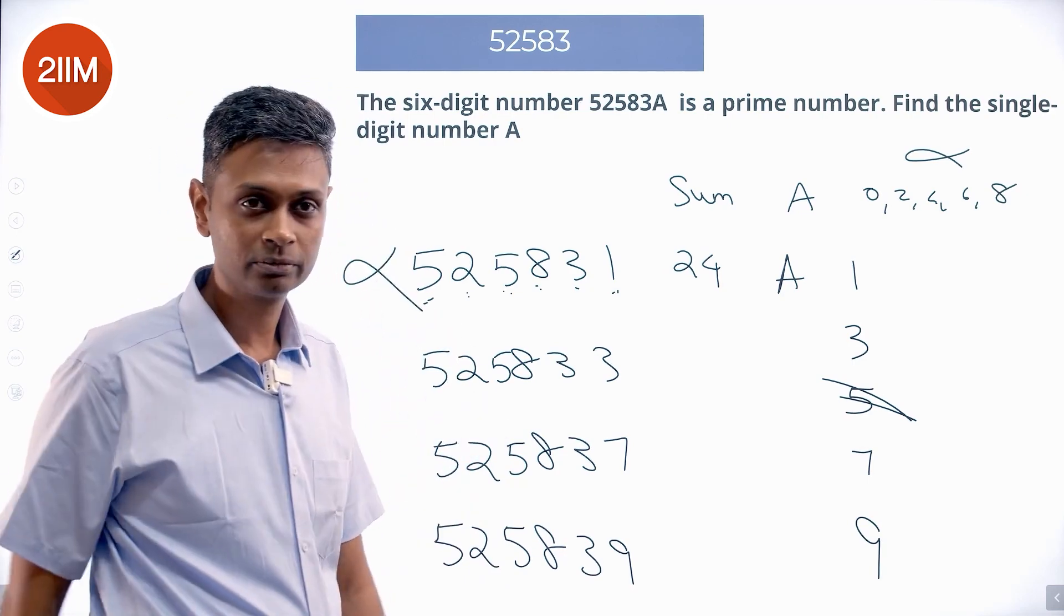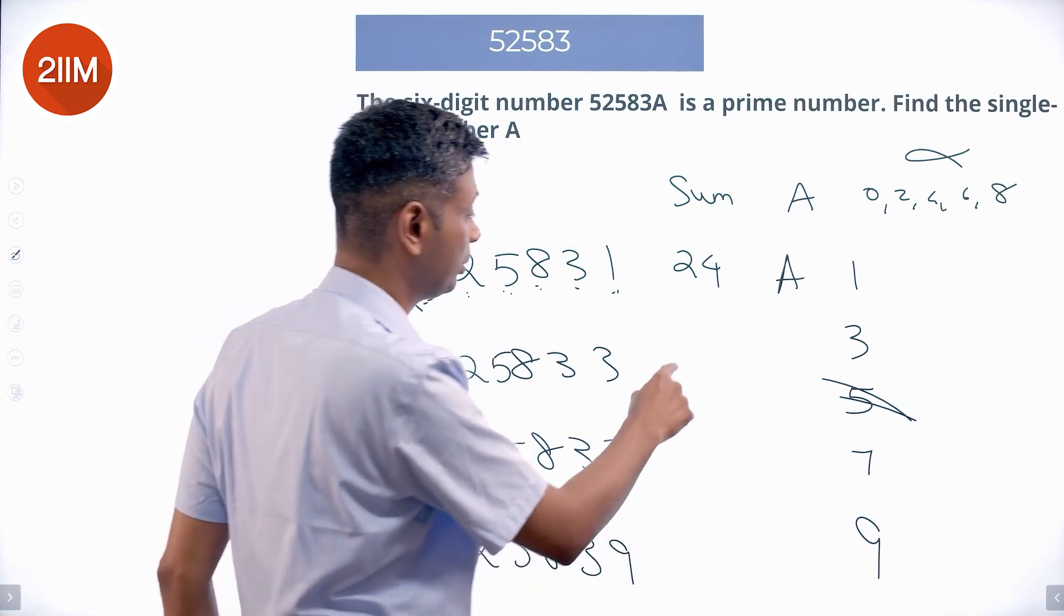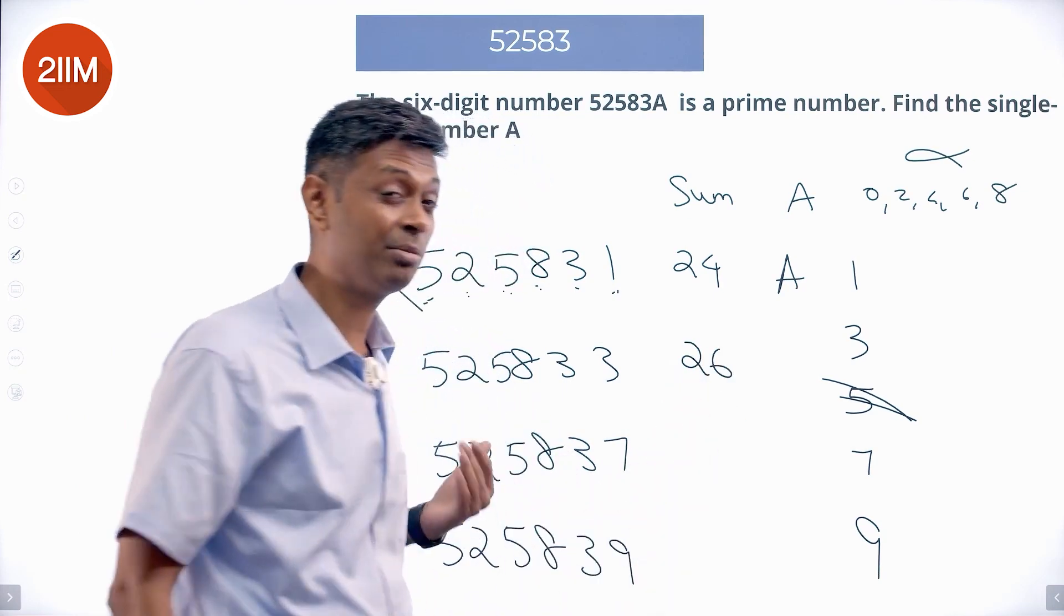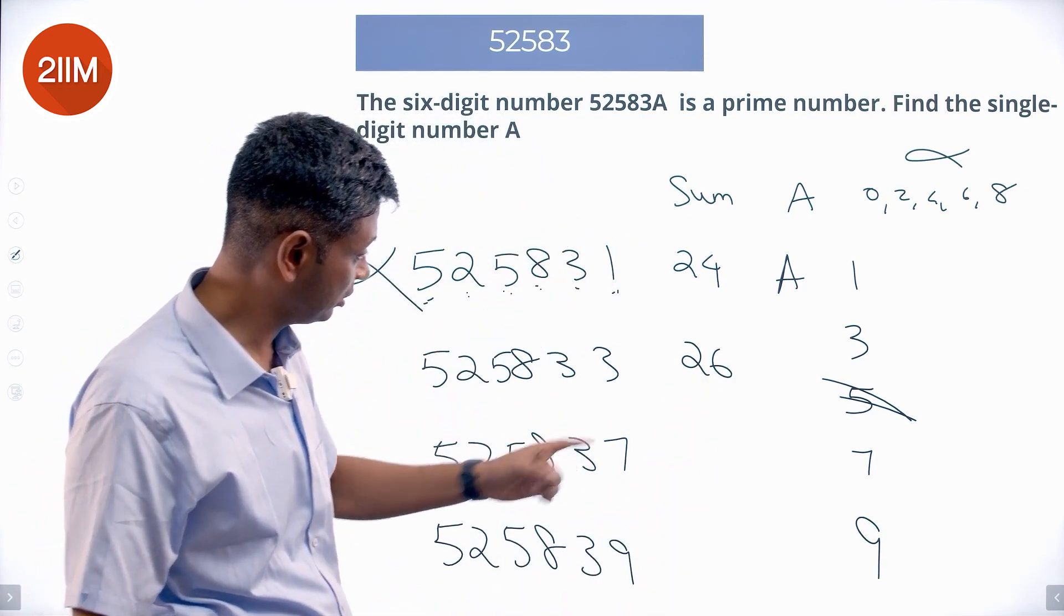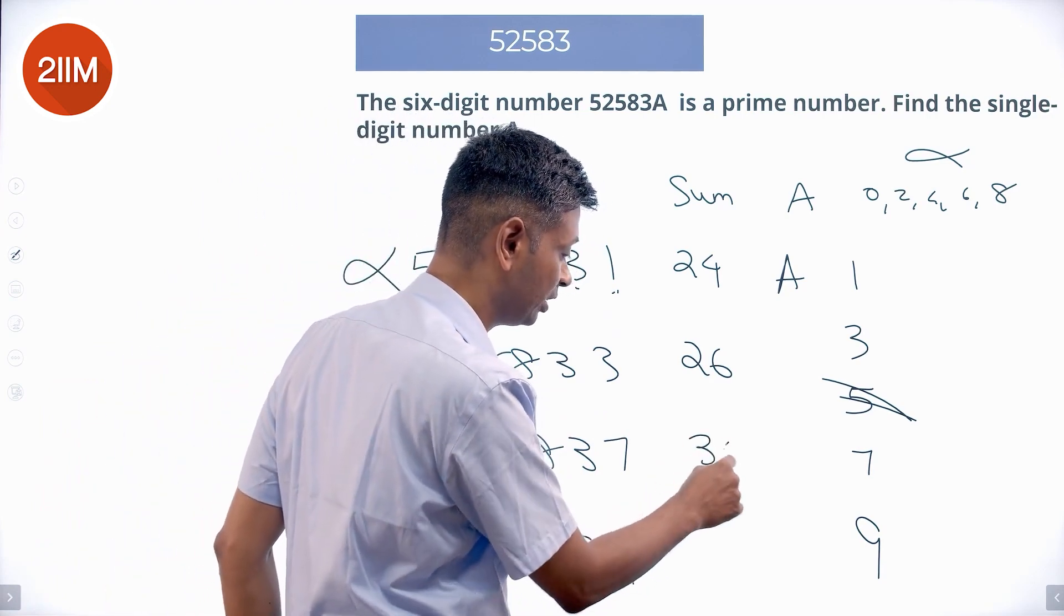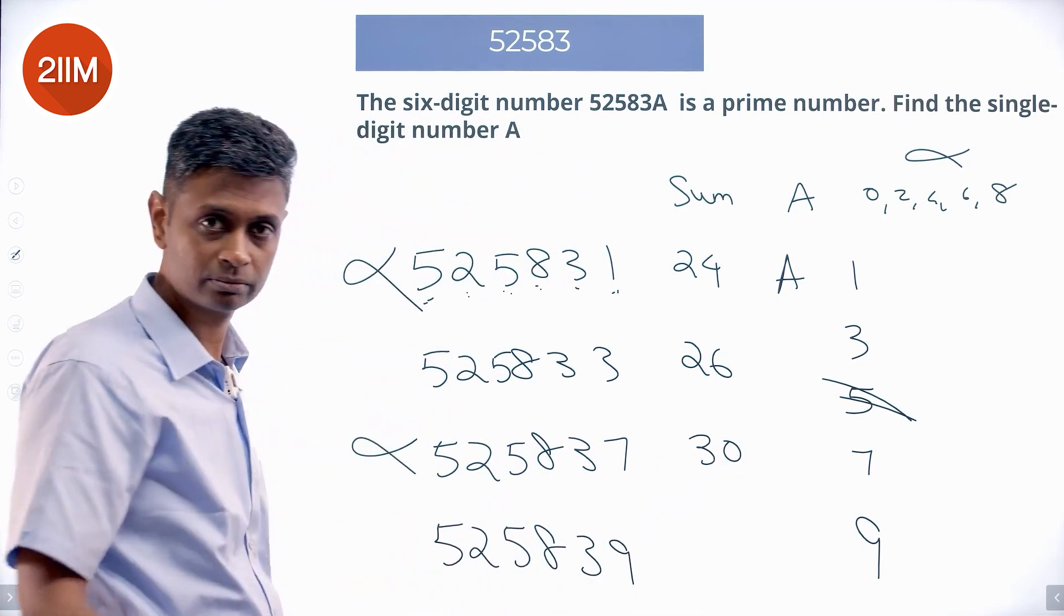Instead of 1, I put 3 here, so sum of the digits will be 26. This could still be prime. 24+6—the sum of the digits will be 30. This is not prime.